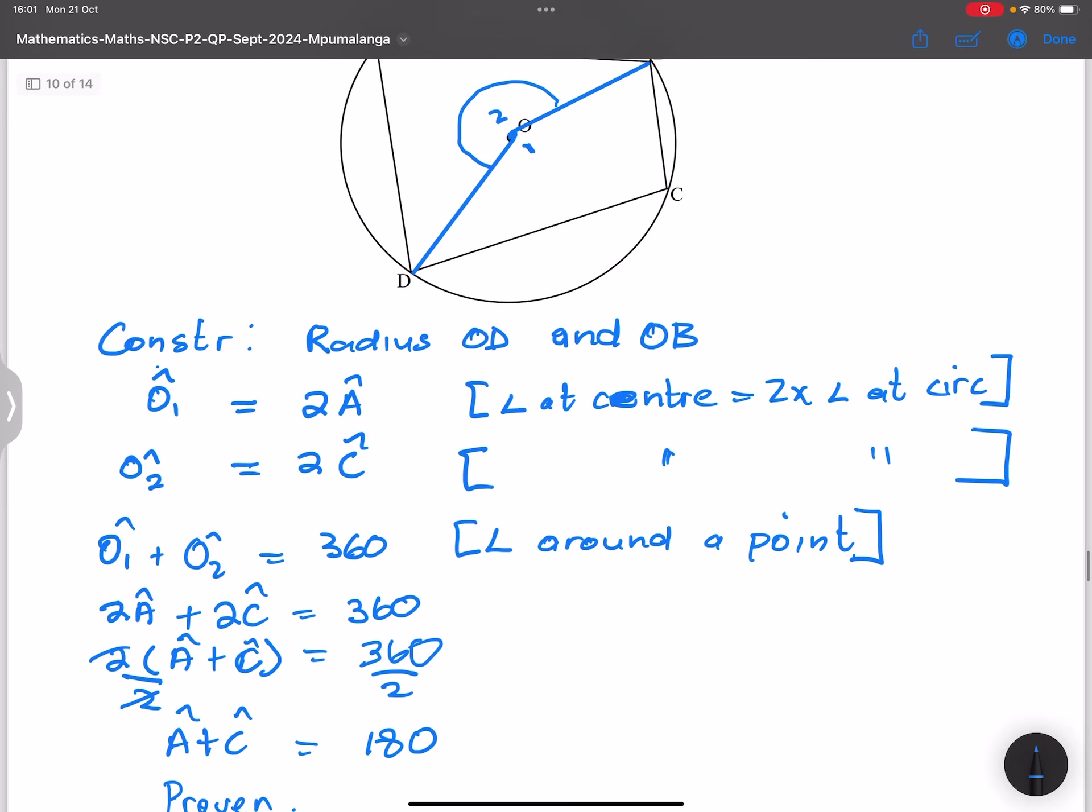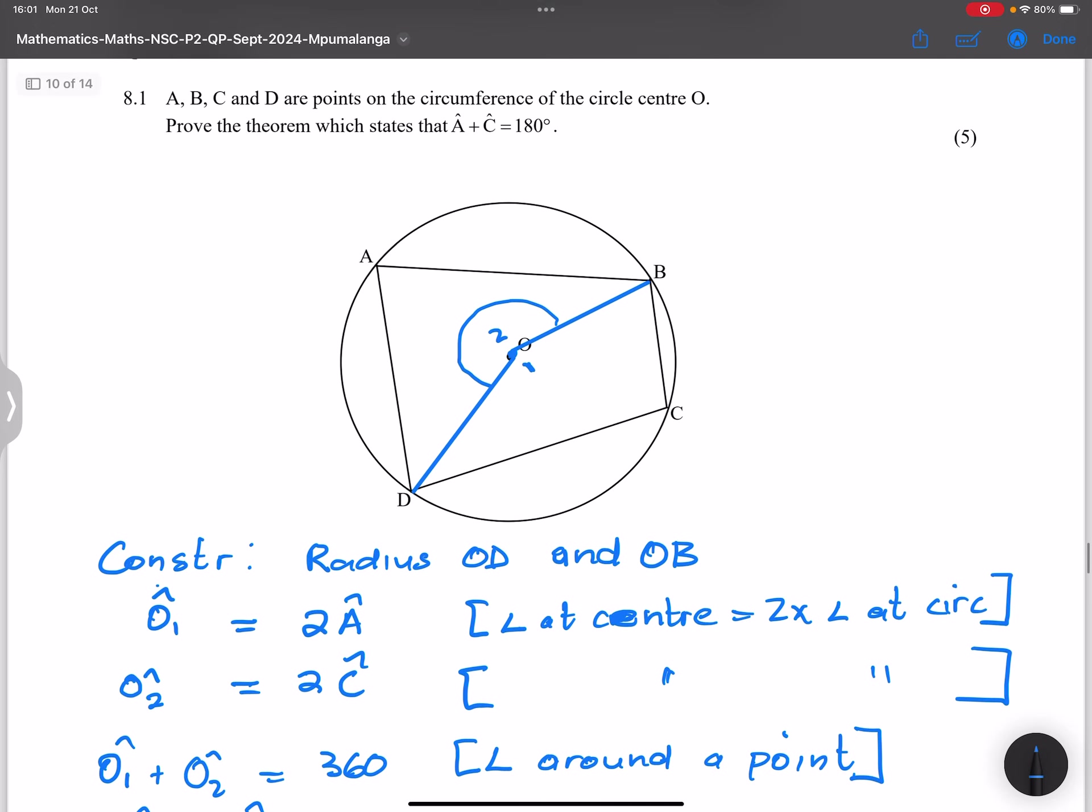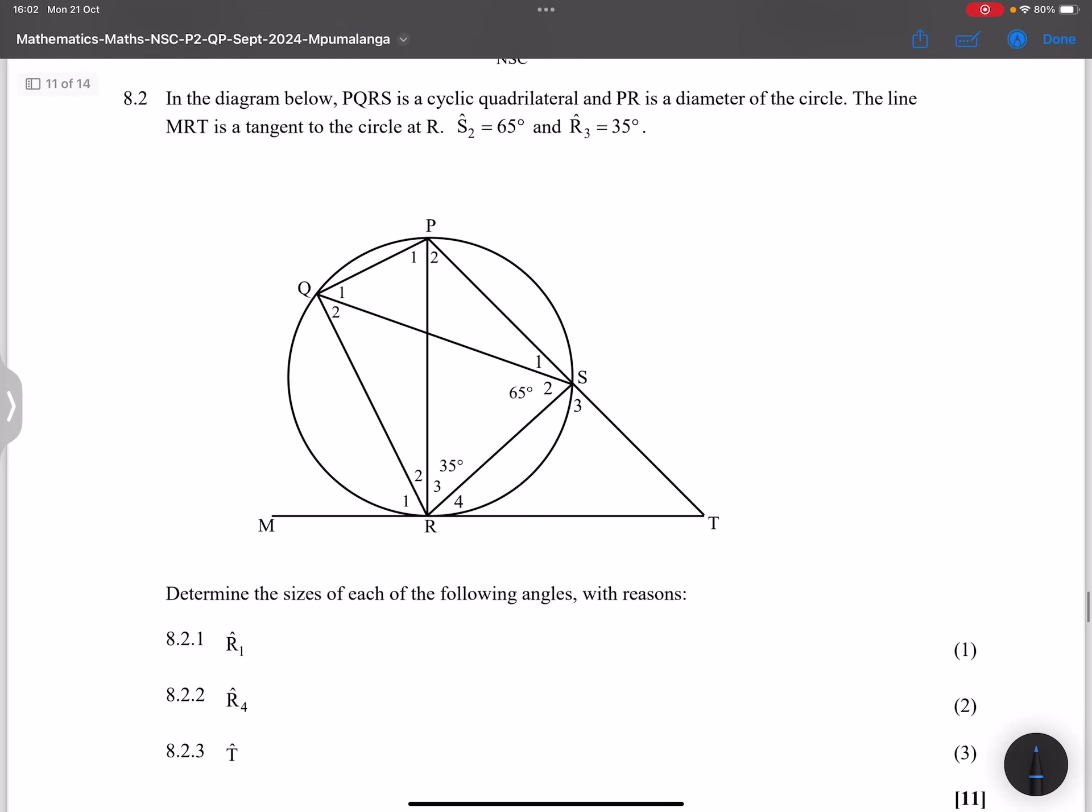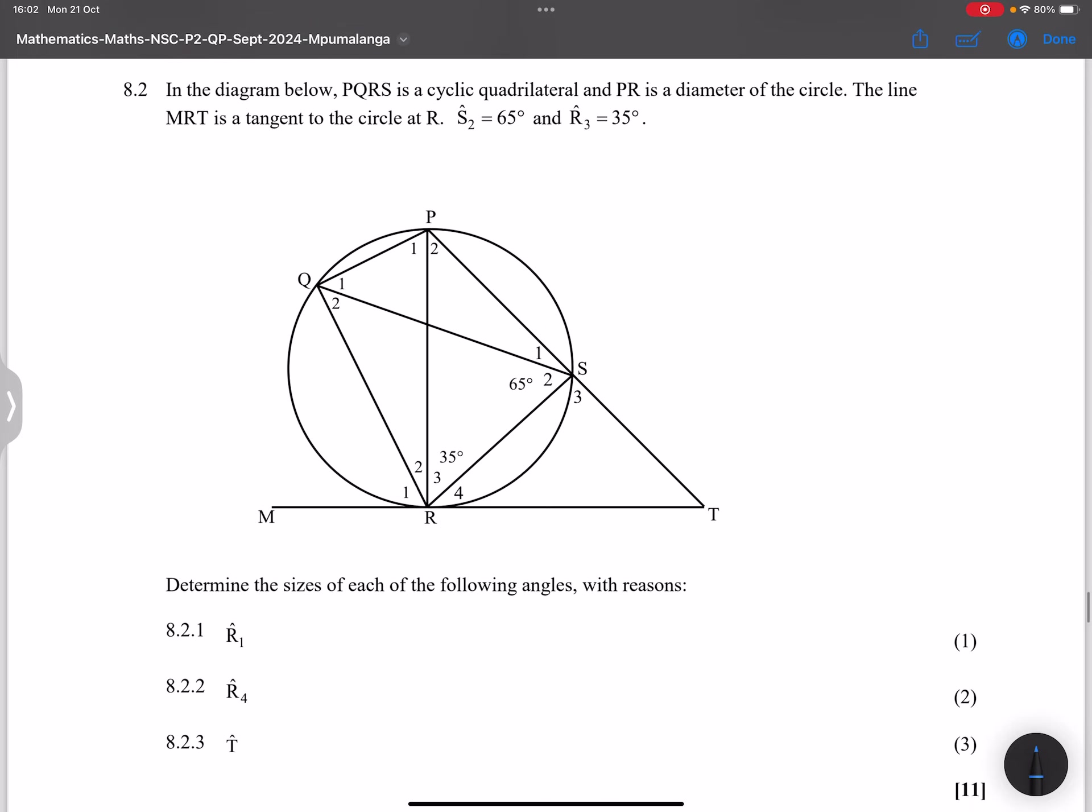Quite easy to go through this theorem. So let's go on to the next portion. They say in the diagram, we've got PQRS, which is a cyclic quadrilateral.